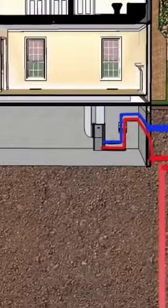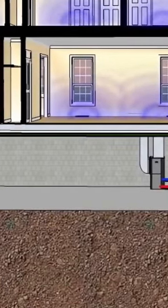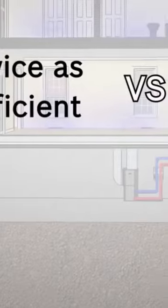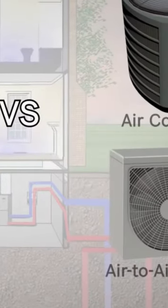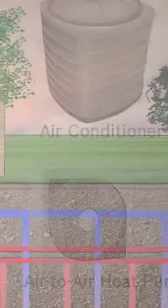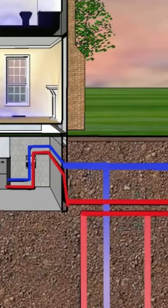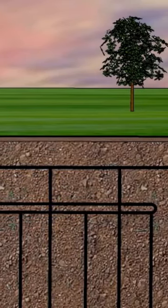Thanks to this constant temperature of the earth, a geothermal heat pump is twice as efficient as air conditioners or air-to-air heat pumps. And because the geothermal heat pump simply pumps heat to and from the earth, it has virtually no impact on the environment.